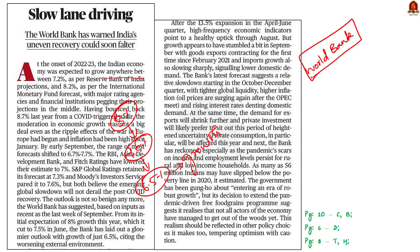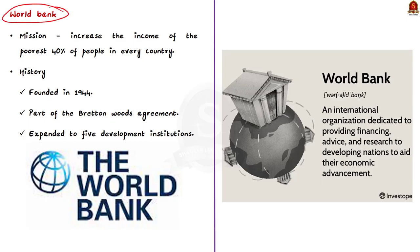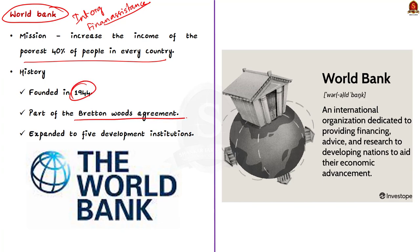In this context, let us learn about the World Bank in a prelims perspective. The World Bank is an international organization that offers financial assistance to developing nations to fight poverty. Its mission is to increase the income of the poorest 40% of people present in every country. The World Bank was founded in 1944 as part of the Bretton Woods Agreement during the last stages of the Second World War. As part of this agreement, both the International Monetary Fund (IMF) and the Bank for International Reconstruction and Development (IBRD) were established.